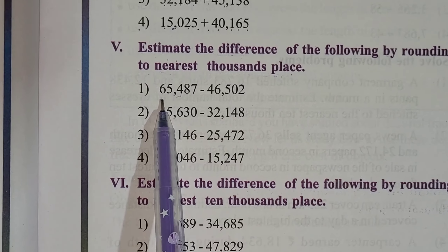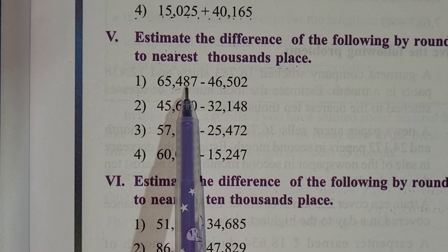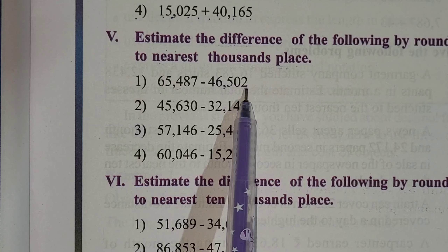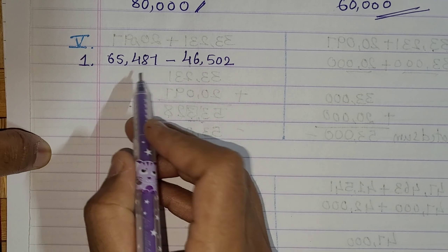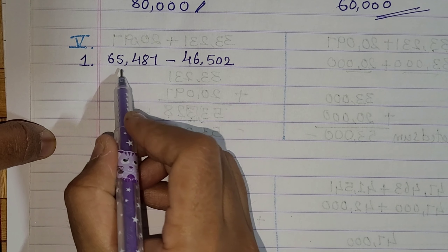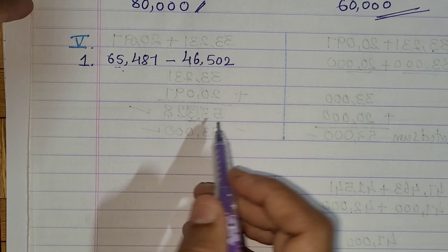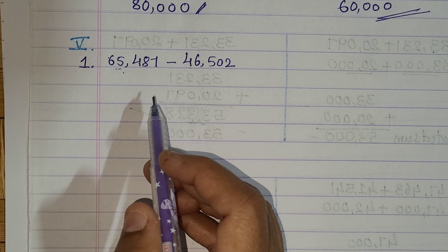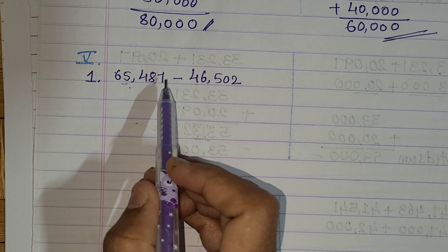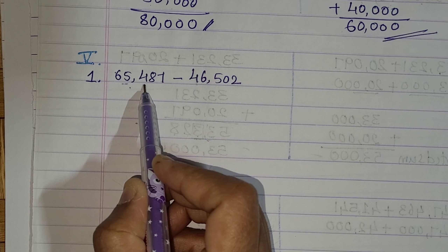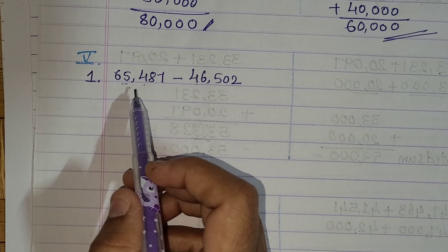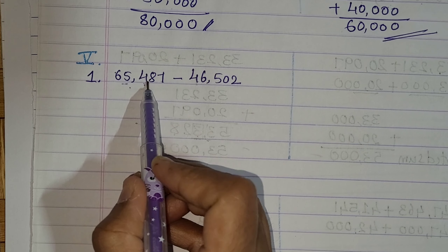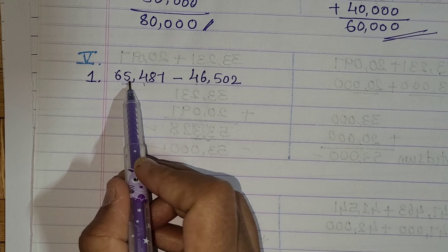So let's take the first example. Here you can see: 65,487 minus 46,502. First we have to round off this number to the nearest thousandth place. So if the digit at the hundreds place is 1, 2, 3, or 4, then we have to replace units, tens, and hundreds by 0. If the digit at the hundreds place is 5, 6, 7, 8, or 9, then we replace units, tens, and hundreds by 0 and add 1 to the thousandth place.